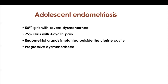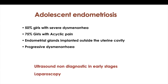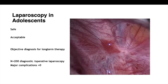Usually they have progressive dysmenorrhea — they will easily tell you that last year they would take Meftal Spas and it got better, but this year they have to take the injection. This is a sign of progressively increasing disease and should directly point you towards endometriosis. Ultrasound in the initial stages is completely non-diagnostic because the disease is peritoneal and the lesions are so small they will not be picked up by ultrasound, MRI, or CT scan. The only way to diagnose this is by doing a laparoscopy. Laparoscopy in adolescence is completely safe. This is a red flame lesion of endometriosis on the peritoneum with wide areas of scarring. These small lesions can lead to a lot of pain because the peritoneum in this area is very sensitive.